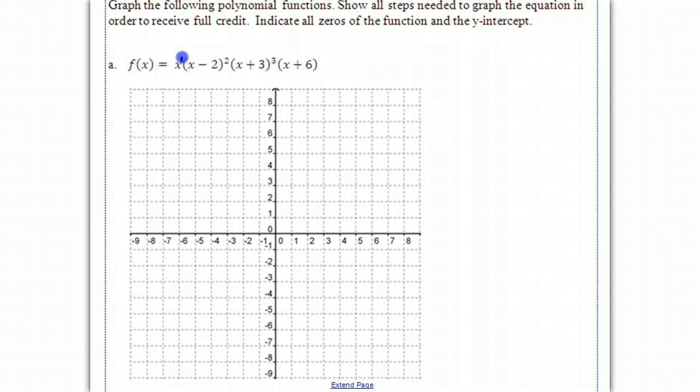Another factor is (x + 3) cubed, so that means you have 3 more x's multiplied together. And finally, another (x + 6) to the first. So if you add those exponents together, you get 3 plus 2 plus 1 plus 1. This is a 7th degree polynomial.